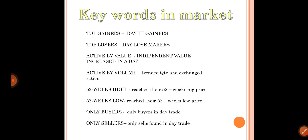Active by value means stocks whose independent value increased in a day, including trading quantity and exchange ratio. Then 52-week high means a stock reached its highest price in 52 weeks on that particular day. 52-week low means it reached its lowest price — for example, a stock that was at 50 rupees now trading at 2 or 3 rupees.